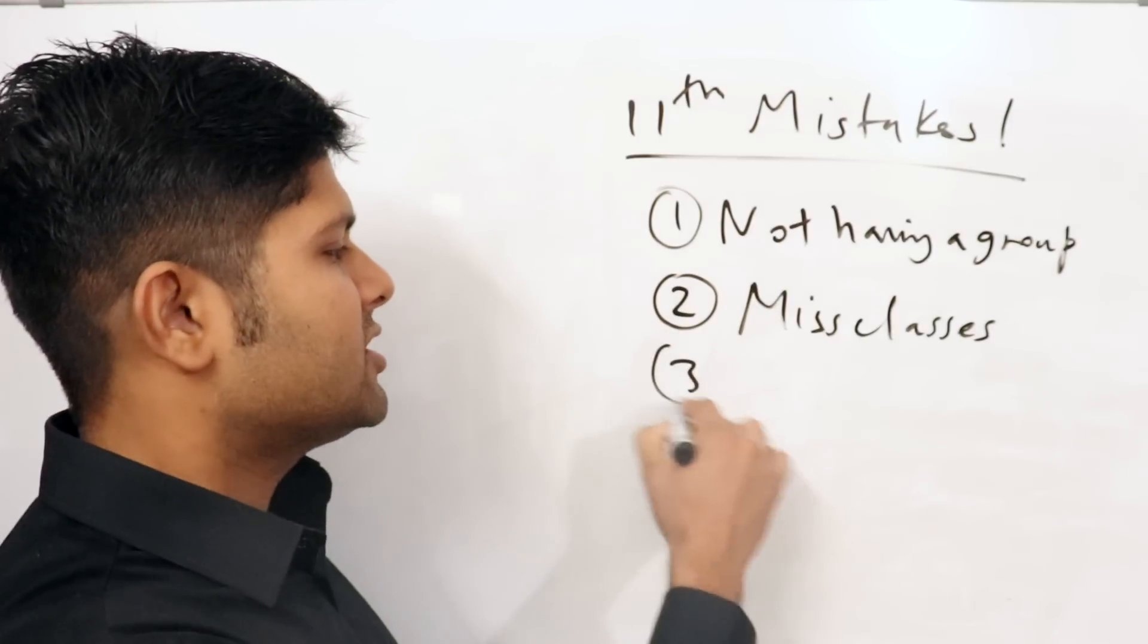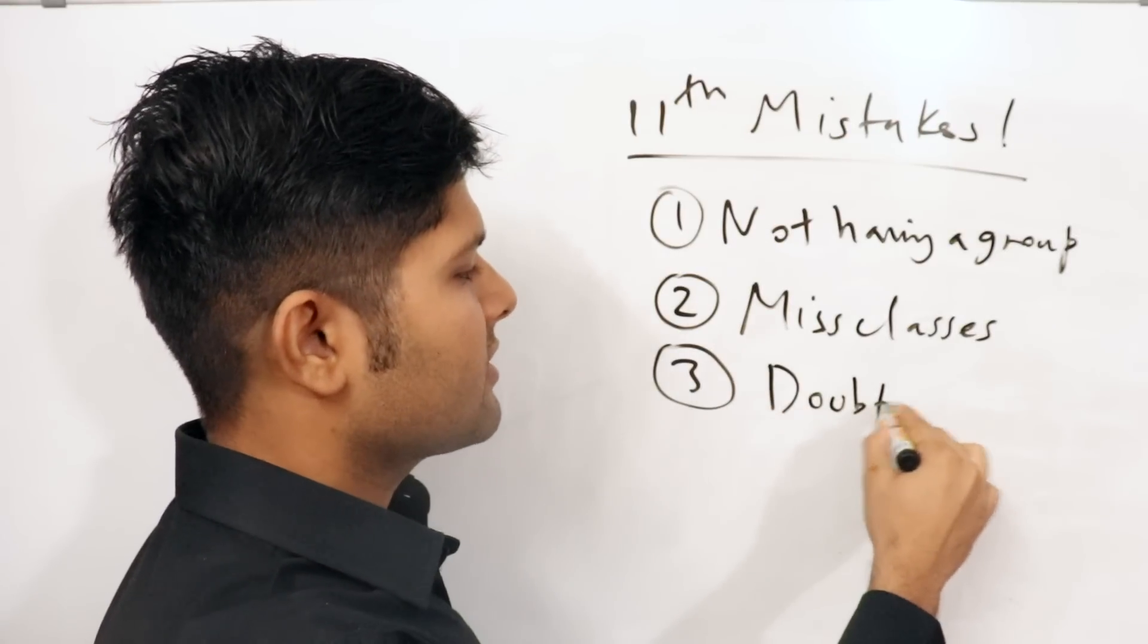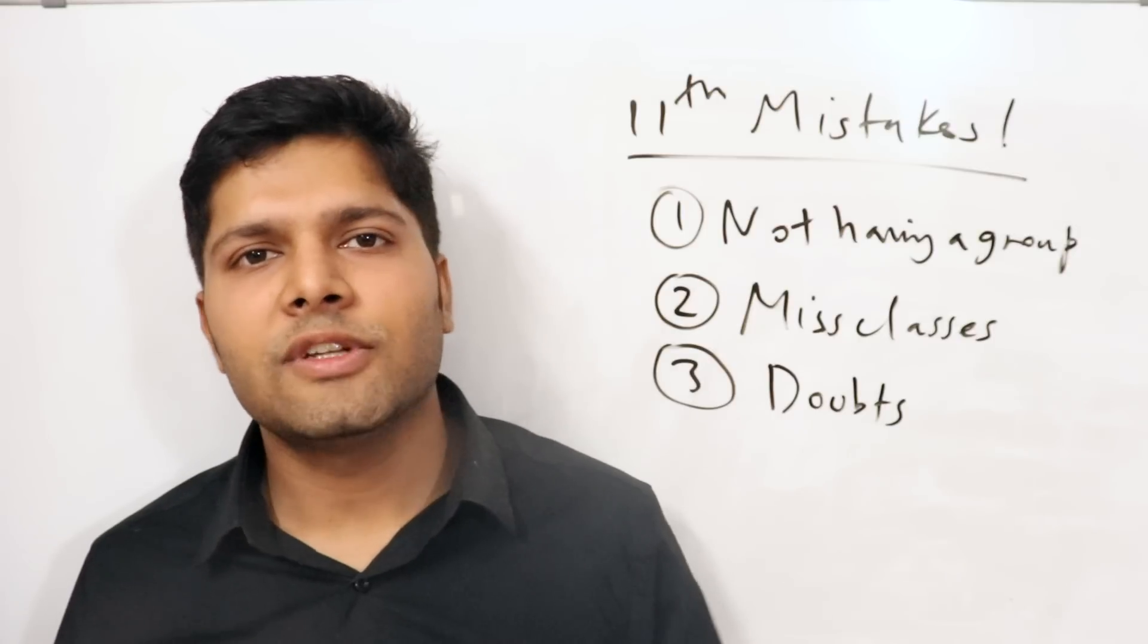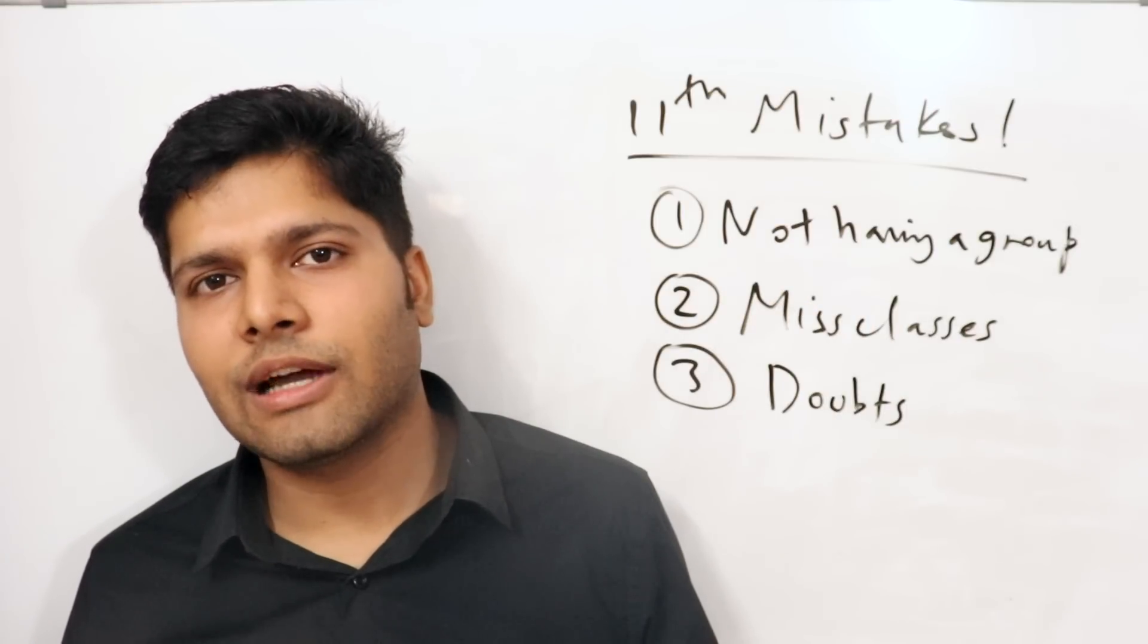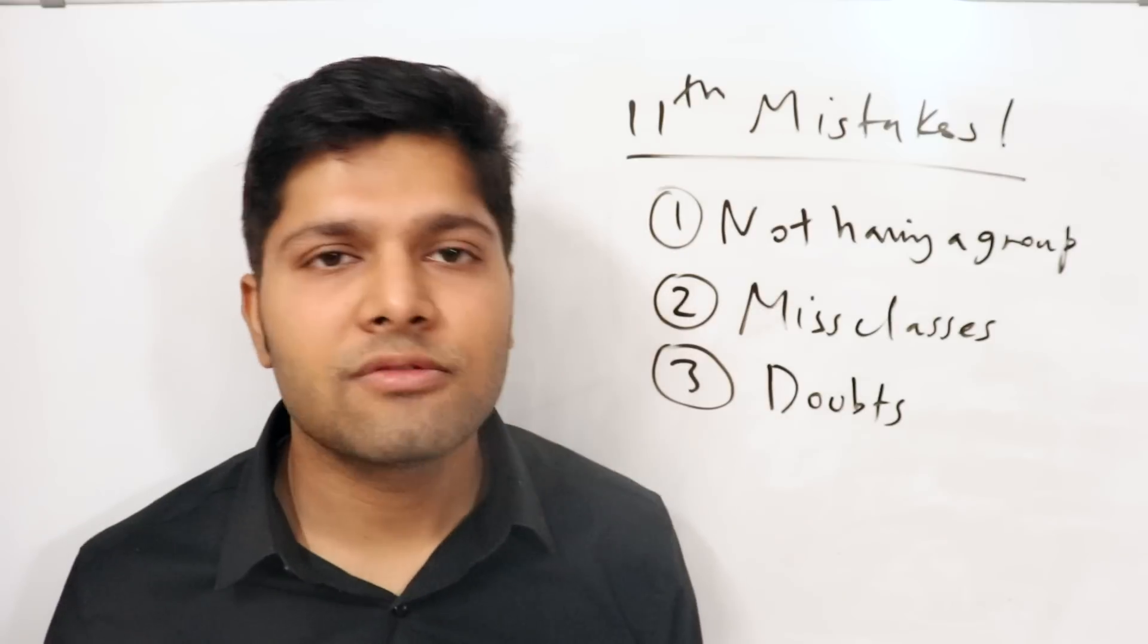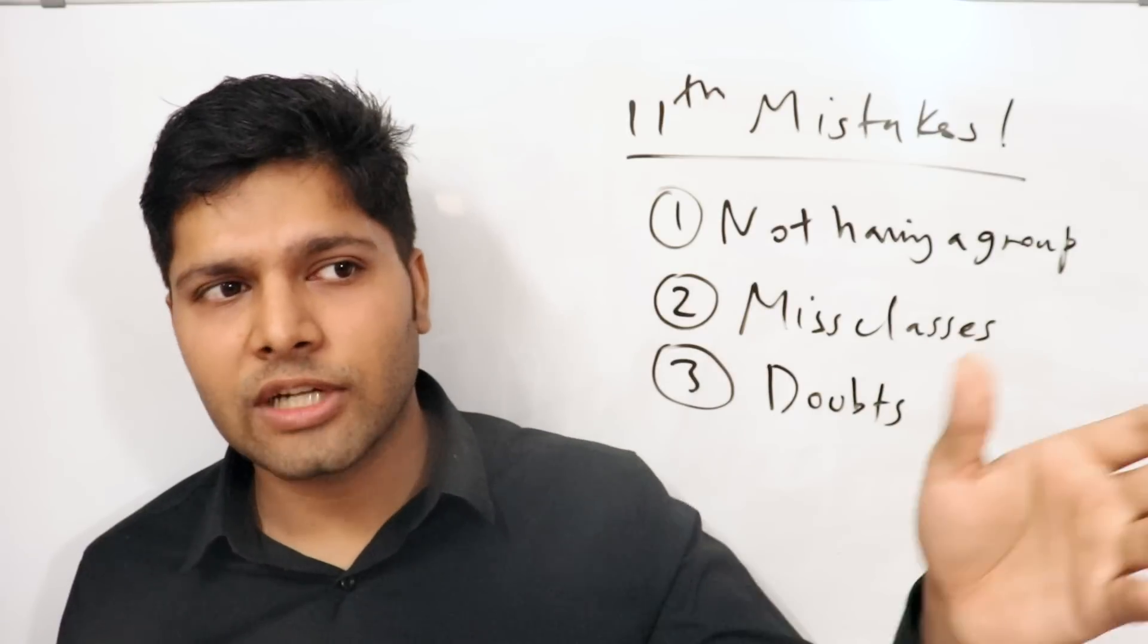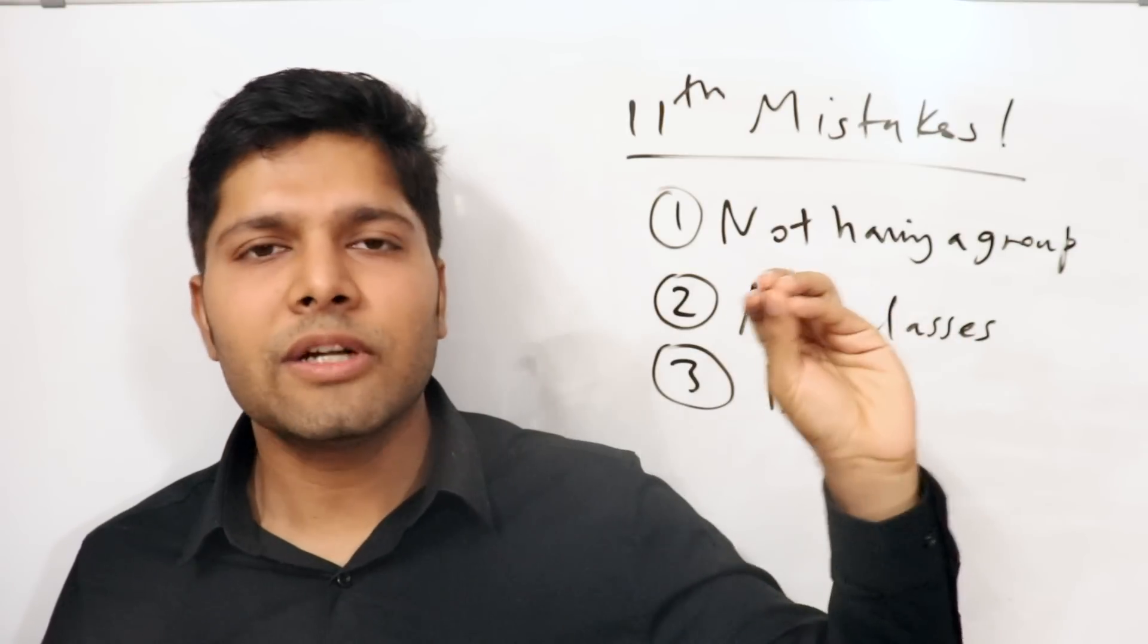The third mistake which you can make is to not clear doubts. So a lot of people are embarrassed to ask doubts in classes. They just can't do it. I was not at all. I always used to ask the silliest of doubts in my class and nobody cared about it after the first time. And I used to top every exam. So there were students who used to laugh at me when I used to ask silly doubts in class. And on the time of result I used to ask them, bro, you used to laugh at me, you scored 30%, I scored 80%. So who's laughing now?